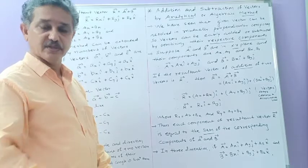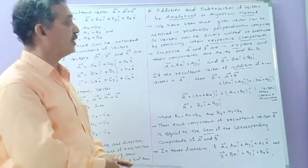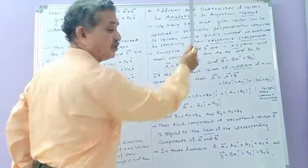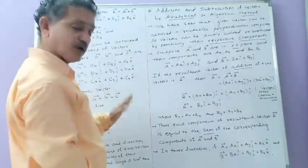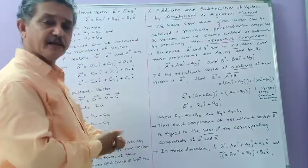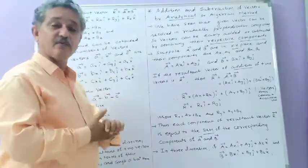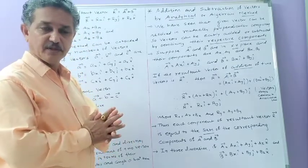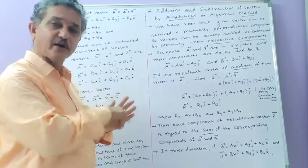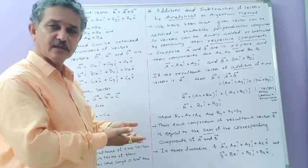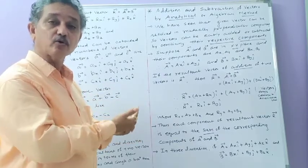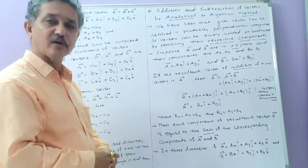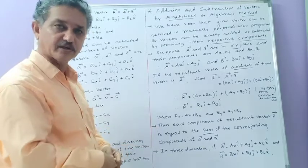That is why we use the analytical or algebraic method for addition and subtraction of vectors. In this method, the given vectors must be expressed in terms of their vector components. Then you add the corresponding components for vector addition, and subtract the corresponding components for vector subtraction, to get the resultant vector.